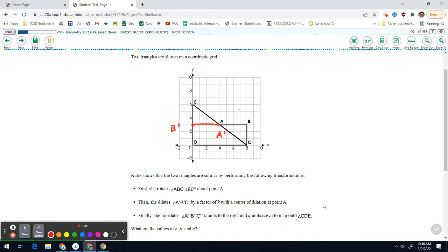Same thing with C. C will be on this line, the same distance away. So it's going to be right here on top of E. So there's C. So that's the first one.